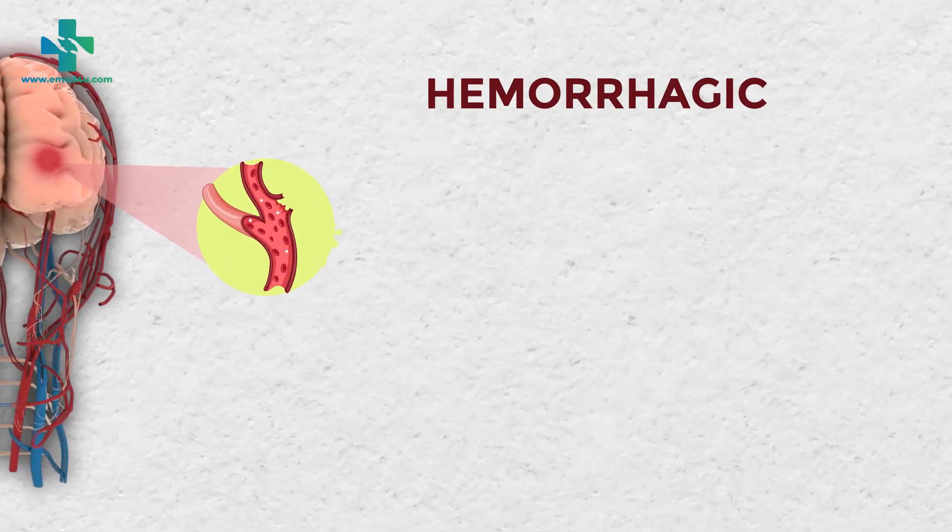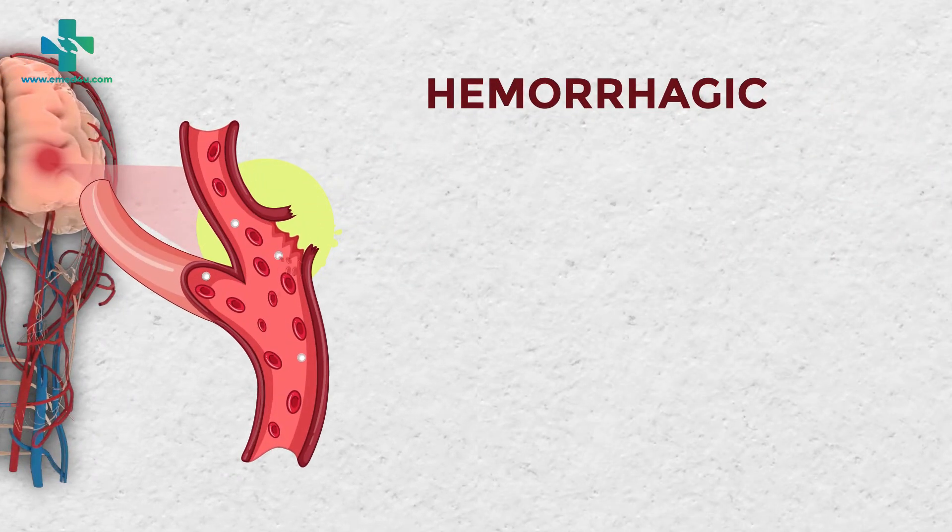Hemorrhagic stroke occurs when a blood vessel begins to bleed into the brain. This might happen because of a number of reasons: it can happen in case of a head injury, or bursting of an aneurysm, or a vessel rupture in someone with high blood pressure.